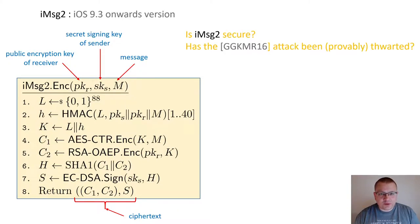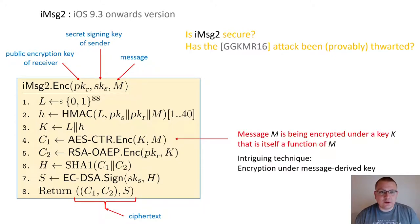The main question we want to answer is whether the new scheme is secure, and specifically, has the 2016 attack been thwarted? On the more theoretical side, we observe that iMessage encrypts a message under a key that is itself a function of that message. This is an interesting technique, providing encryption under a message-derived key.